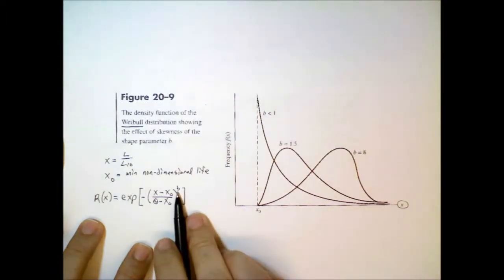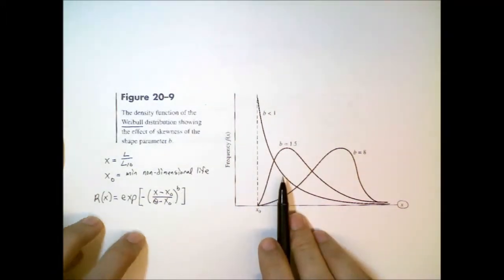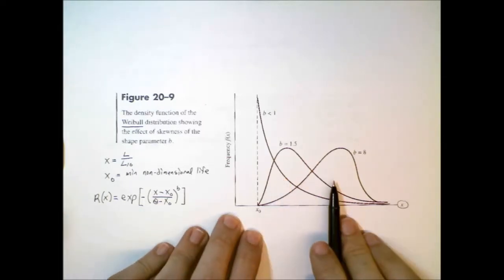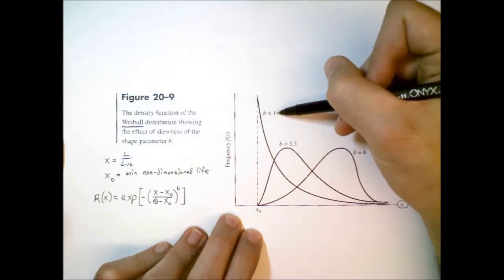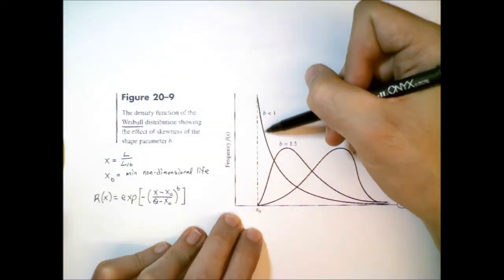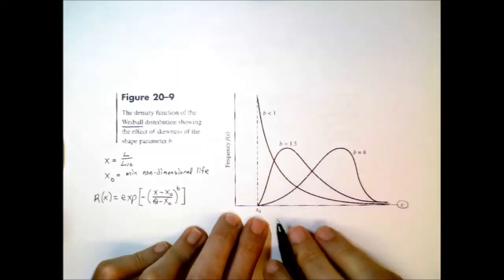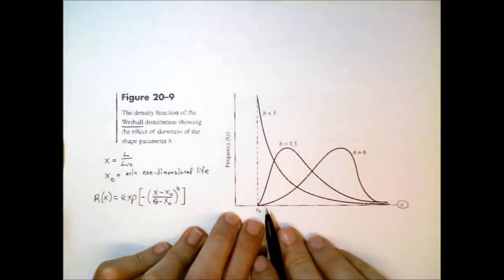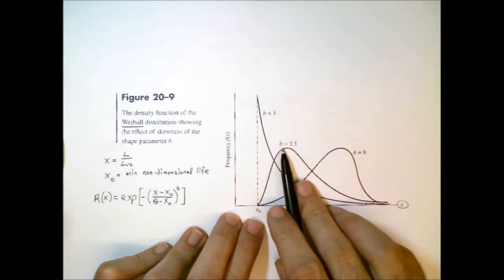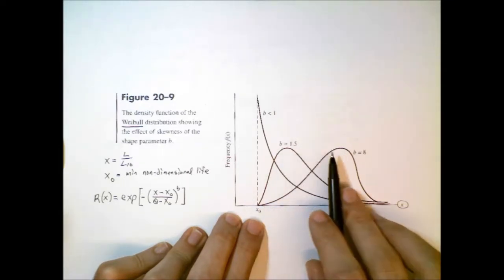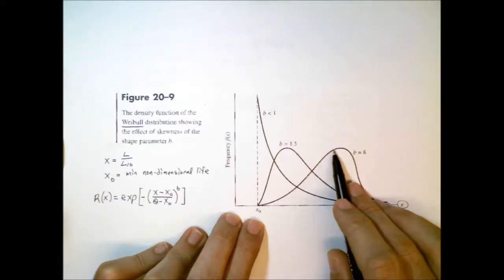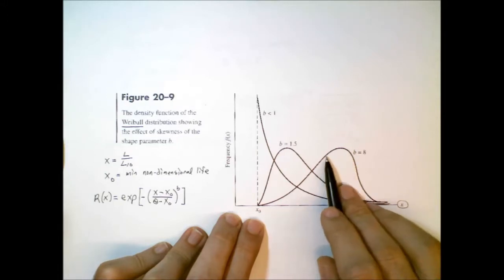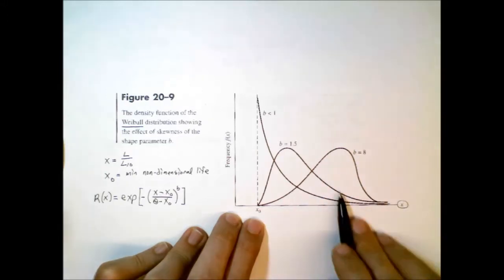Now, b is a shape parameter. You can see here in the Weibull distribution, we have three different Weibull distributions, all with a different value of b. So if b is less than 1, it's very heavily skewed to the left. If you think of this in terms of failure, this means that we have lots of failures early in life. And then as we increase b, it starts to skew the distribution more to the right. So if we have a larger value for b, then we have many more bearings that fail later in life. And obviously that's a more desirable property.